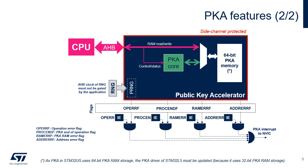The PKA has three error flags: the operation error flag, or OPERRF; the address error flag, or ADDRERRF; and the RAM error flag, or RAMERRF. All flags can generate an interrupt if the corresponding interrupt-enabled bit is set: OPERRIE, PROCENDIE, ADDRERRIE, or RAMERRIE.